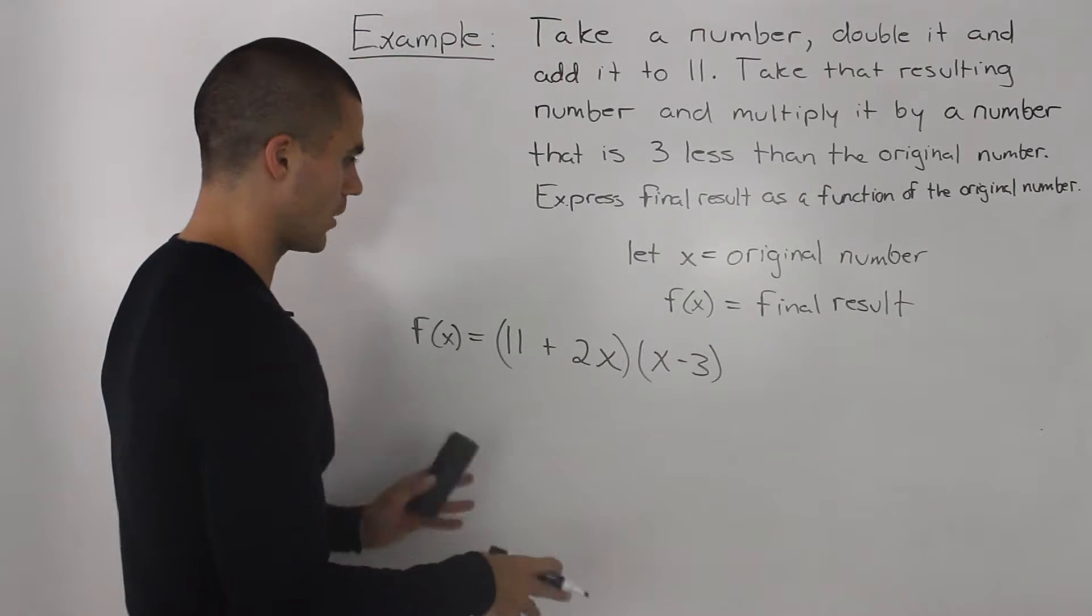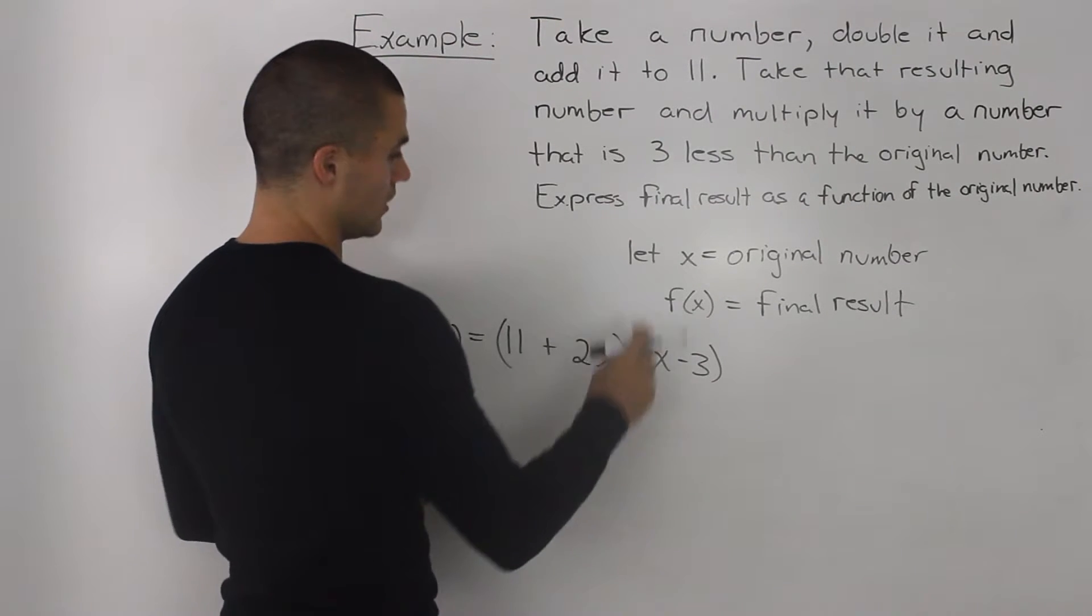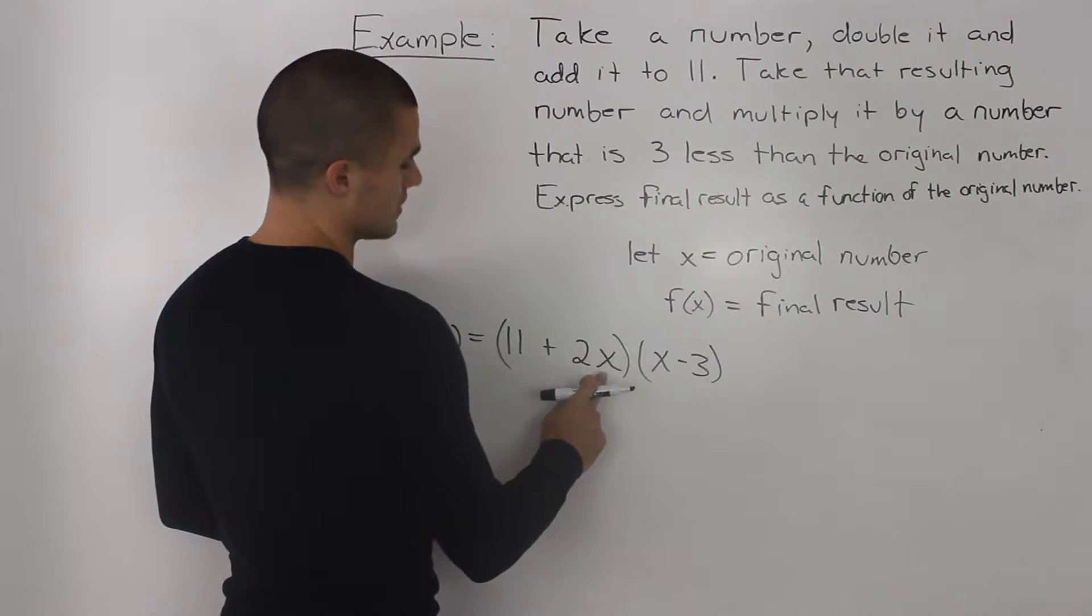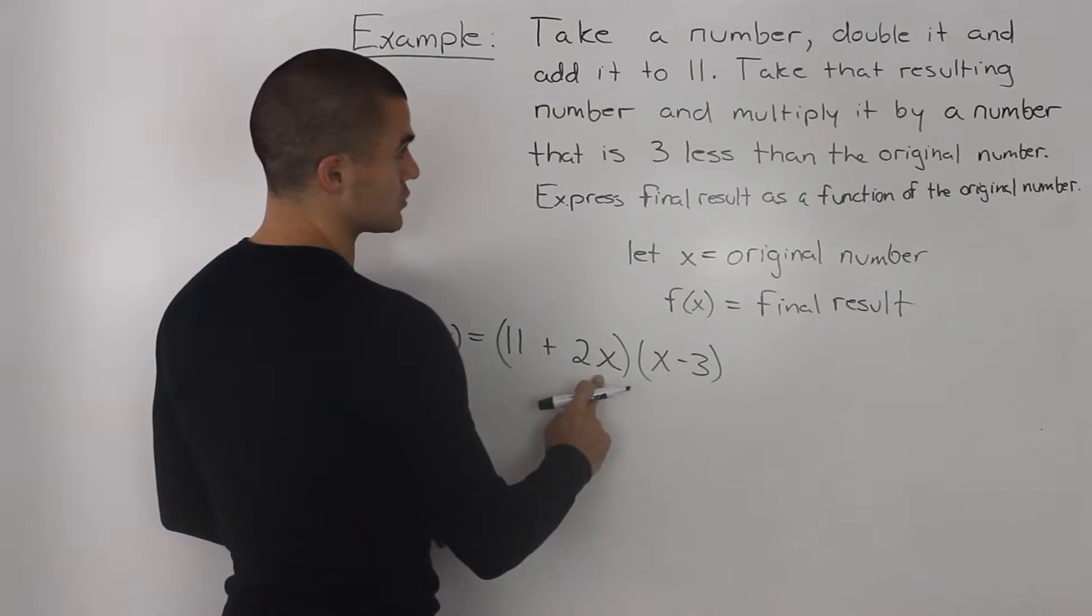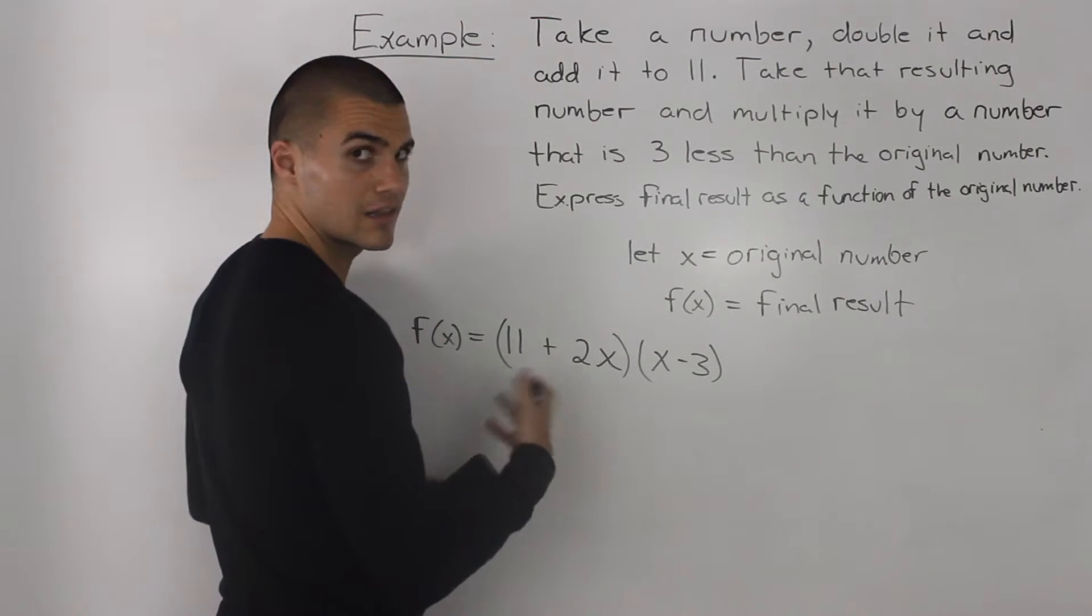Notice how it's a function. So, one more time. We're taking a number x, we double it, so we multiply it by 2, and then we add it to 11.